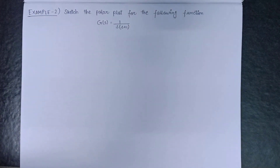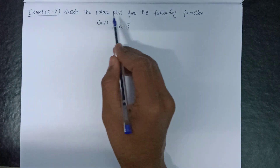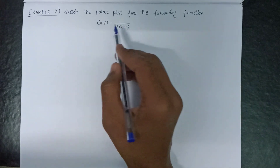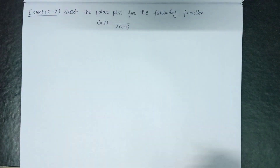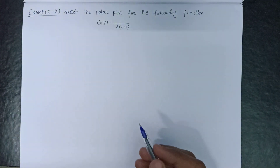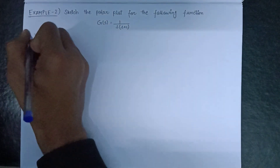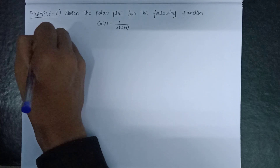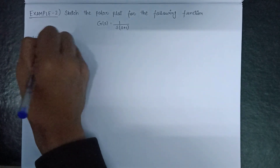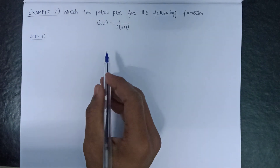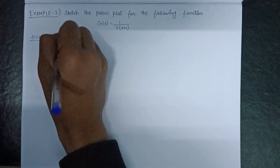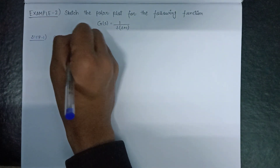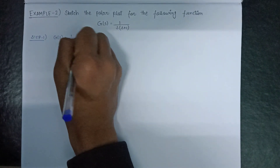Welcome all. In this lecture, we are going to solve one more example, that is example number 2. Sketch the polar plot for the following function, that is given as G(s) = 1 over s(s+1). The open loop transfer function is already given in the question, that is G(s) = 1 over s(s+1), so step number 1 is completed.